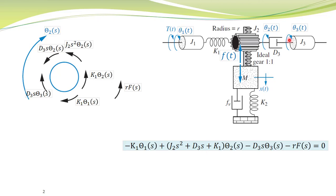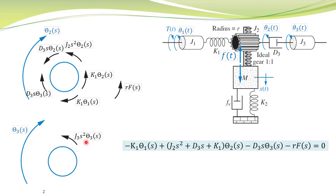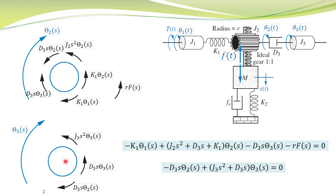Similarly, we can draw the free body diagram corresponding to displacement theta3(t), shown in this diagram. There is a torque due to this inertia, proportional to angular acceleration of this inertial element. There is also a torque due to this damper — both ends of this damper are rotating. Applying superposition, the torques applied by this damper are shown by these arrows. Here is the corresponding torque balance equation: the sum of torques in the counterclockwise direction equals the sum of torques in the clockwise direction.